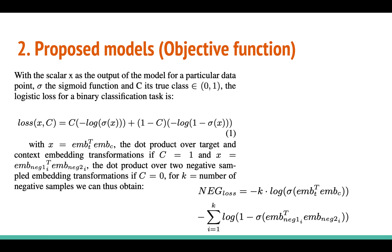If the true target embedding and the context embedding are actually in context, then x should contribute to making c equal to one — we want to maximize this number. This x is the dot product of the target embedding and the context embedding. Maximizing that output, which is maximizing the probability, is equivalent to minimizing the cross entropy, which is why we minimize this loss.